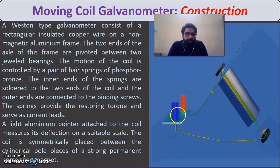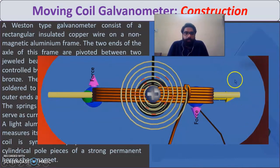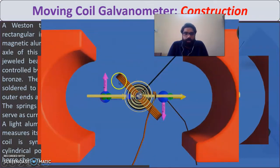With the cylindrical soft iron core in place between the concave magnets, when current flows through the coil, it is in a magnetic field. The force on the coil is F = BIL sin θ. The horizontal components cancel, while the forces on the vertical sides form a couple that produces torque. This torque rotates the coil, causing the pointer to show deflection.